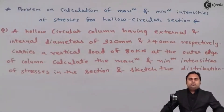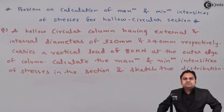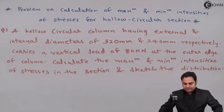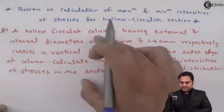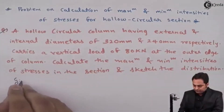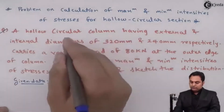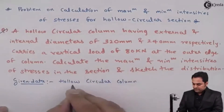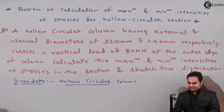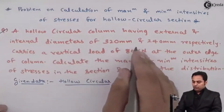Hello friends. In this video we will see a problem on calculation of maximum and minimum intensities of stresses for a hollow circular section. A hollow circular column having external and internal diameters of 320 mm and 240 mm respectively.